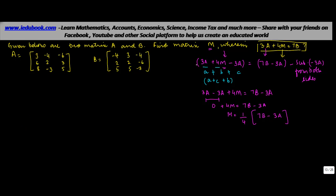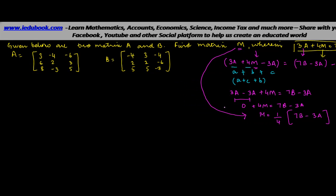What do you need to do here? You need to find out the value of M which we have equated in the form of this equation. So the only thing we need to do now is put in the value of A and B in this equation. So we have M is equal to 1 upon 4, 7B minus 3A.